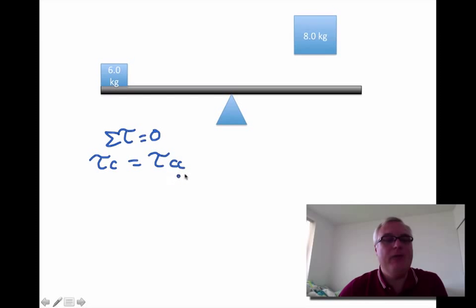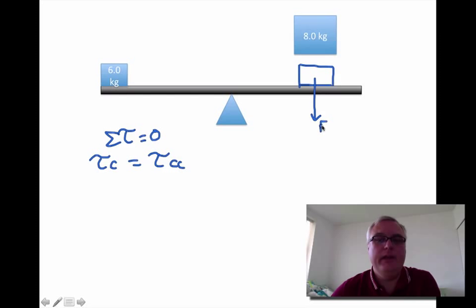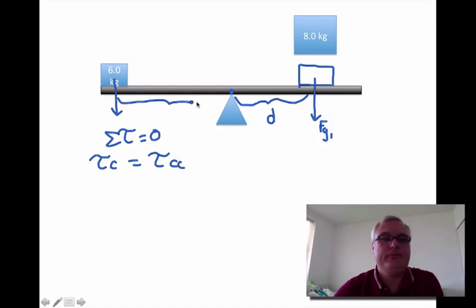In the clockwise direction, our eight kilogram block is probably going to be here somewhere, and its gravitational force, its weight, is pushing down. That weight is acting some unknown distance d from the point of rotation. Remember that distance in the torque is always the distance from the point of rotation. So that's Fg1. We have another force of gravity on this side, which is acting at another distance away.